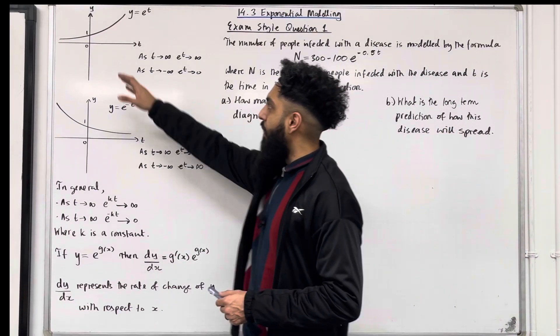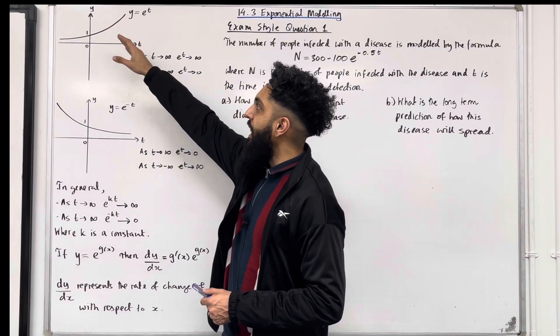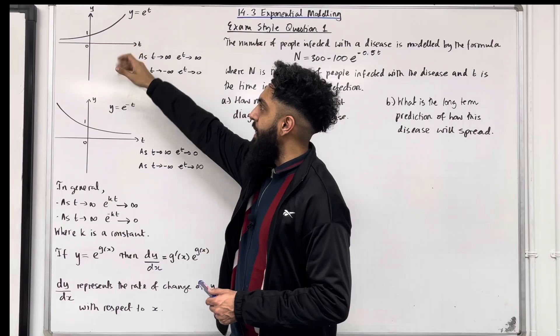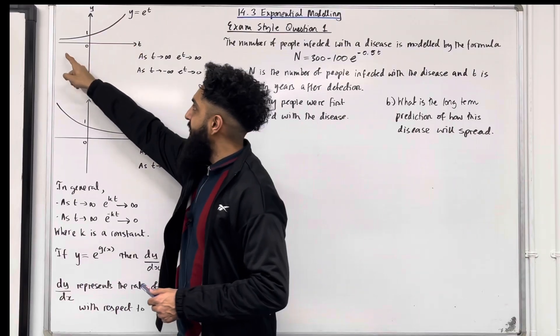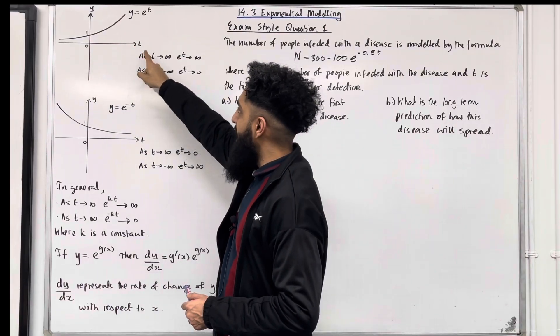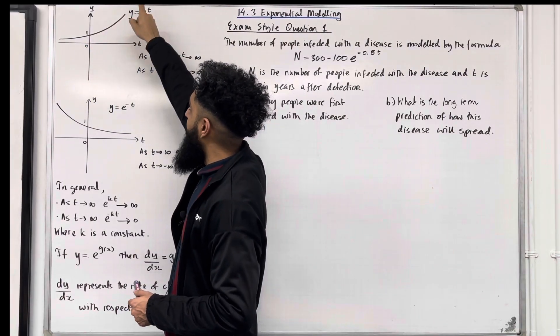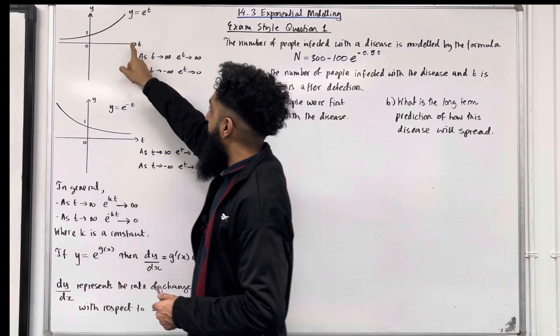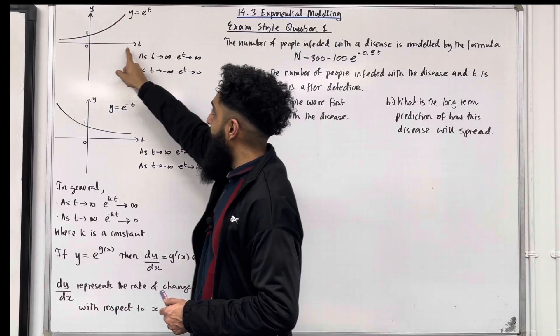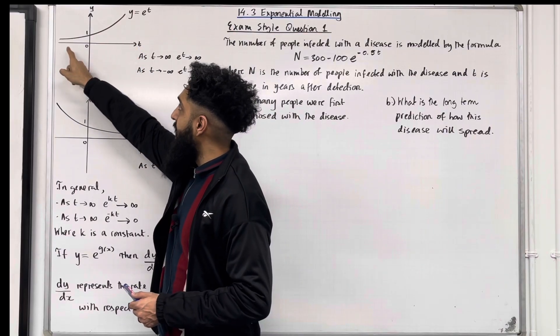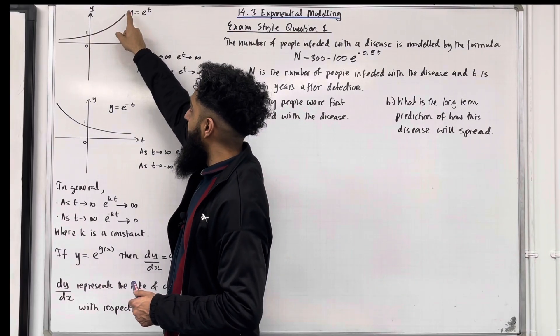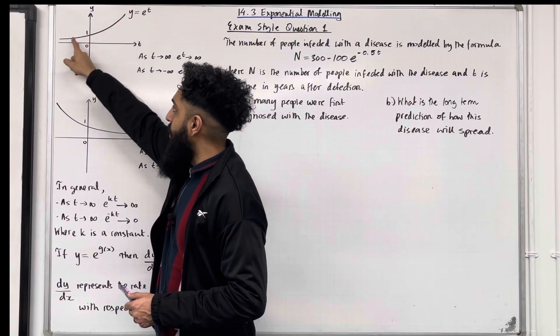Firstly, let's have a look at the graph of y = e^t. As t tends to infinity, e^t tends to infinity. As t tends to negative infinity, e^t tends to zero.